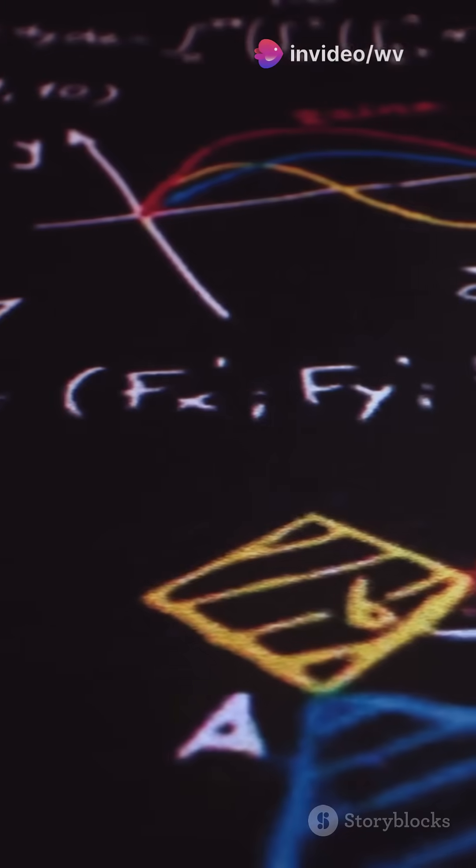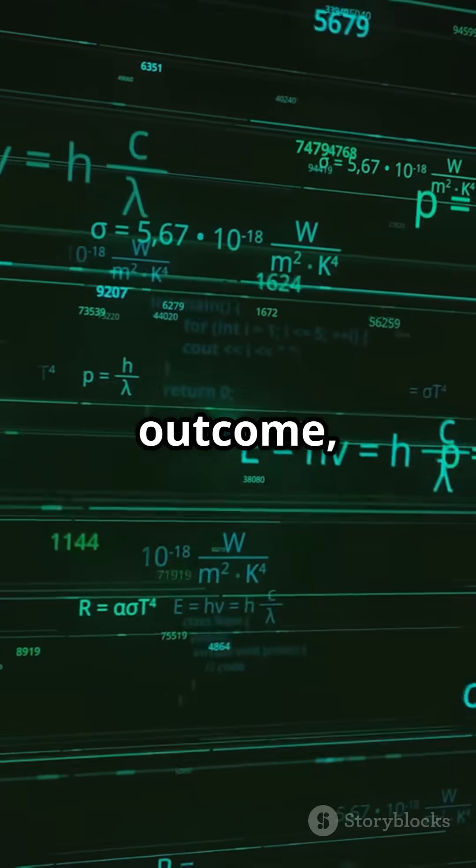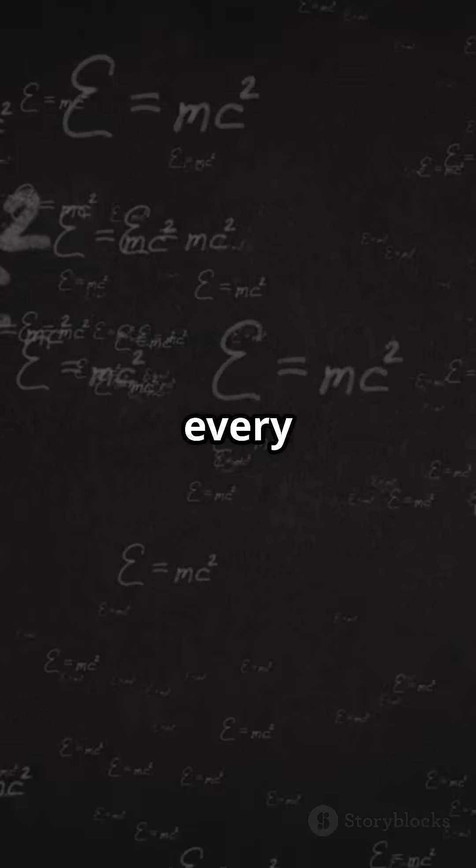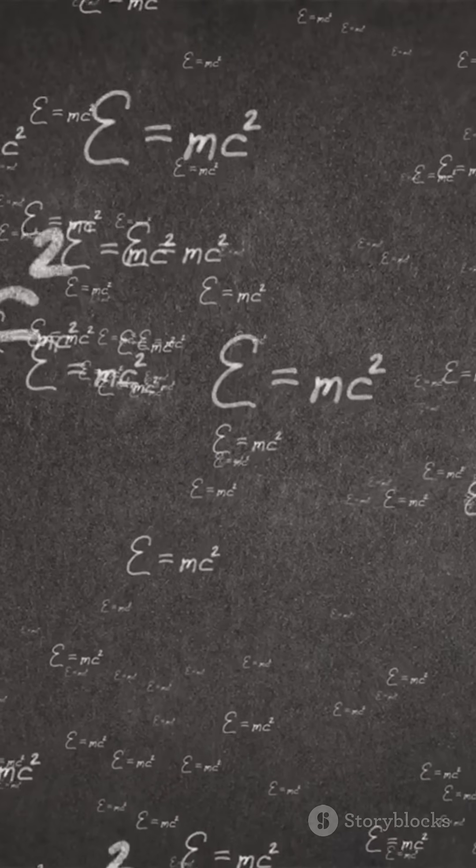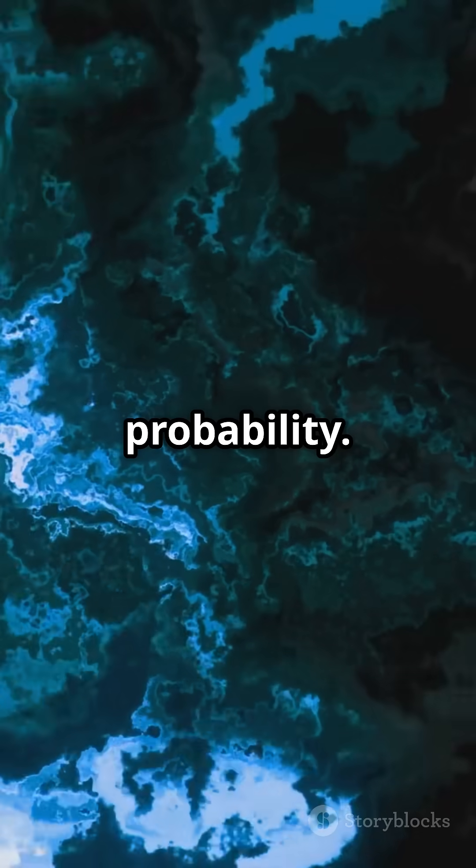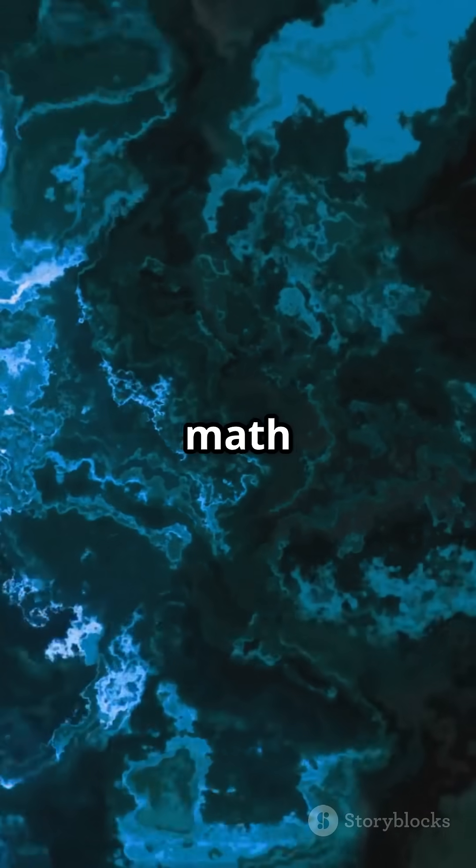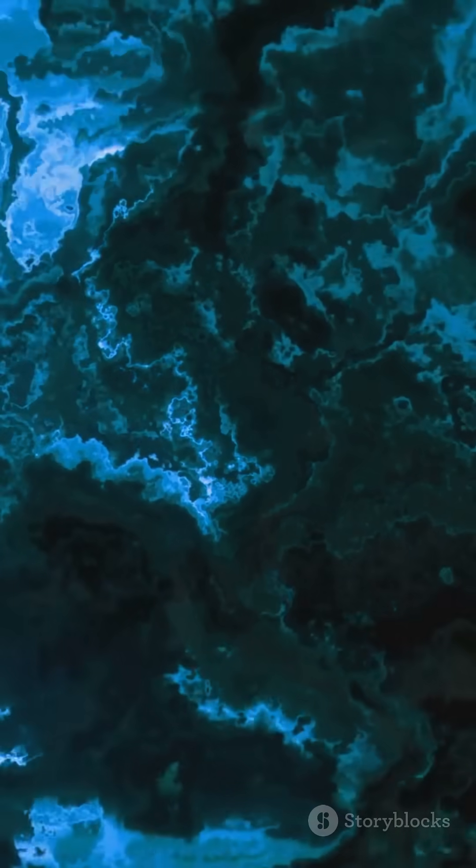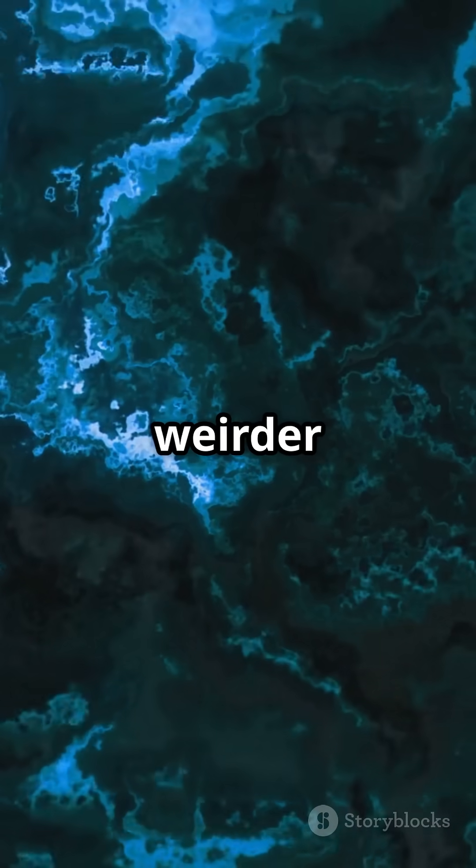And here's the twist. You're not solving for a single outcome. You're solving for every possible outcome at once and then squaring it to get a probability. So yeah, Schrödinger math isn't hard because it's messy. It's hard because reality is weirder than fiction.